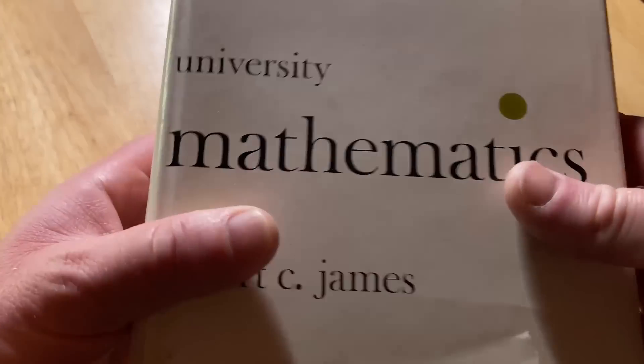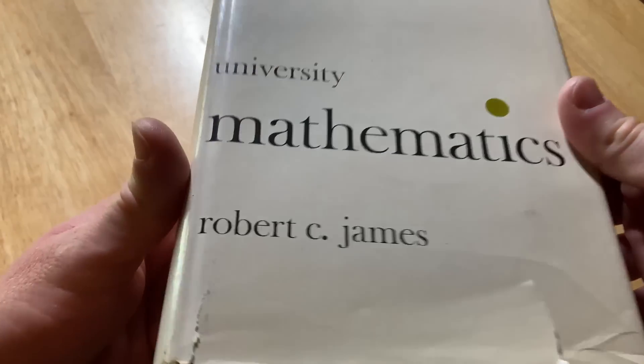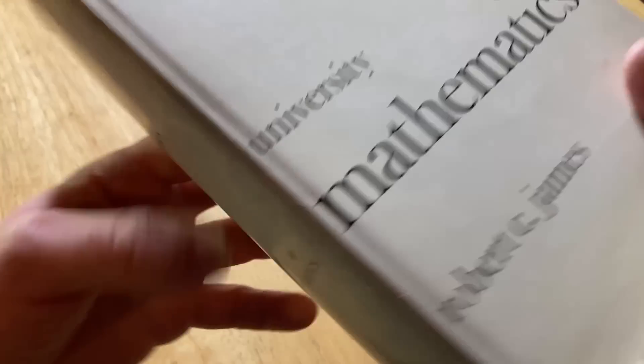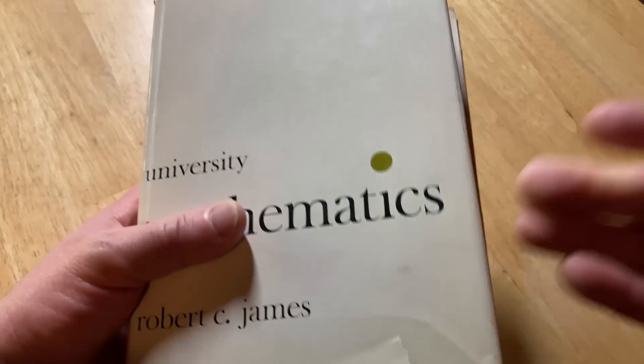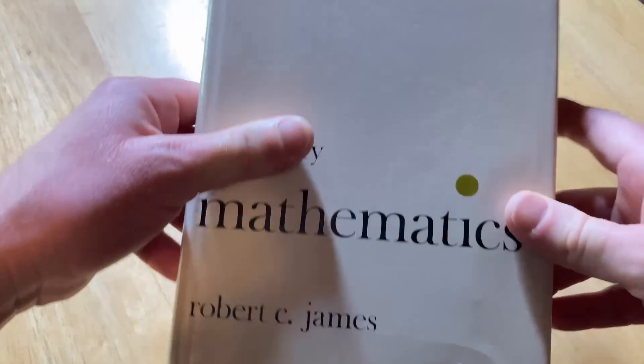It's so ridiculously thick. This is a really thick book on mathematics. It's called University Mathematics, and it was written by Robert C. James.